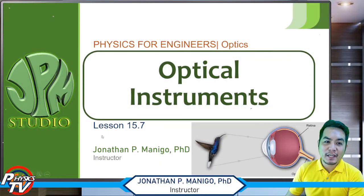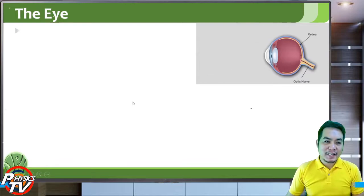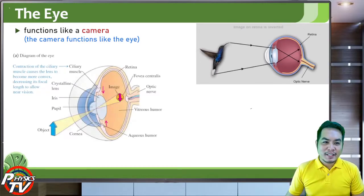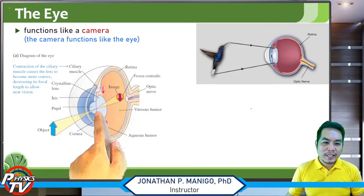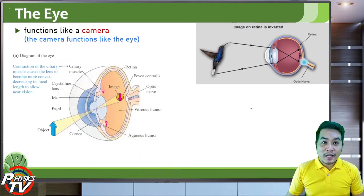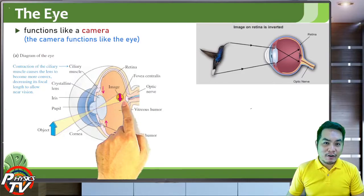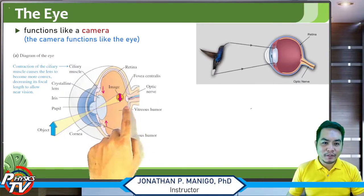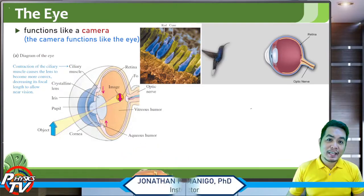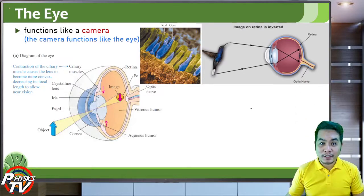The first optical instrument we will discuss is the eye, because it is the basis for most optical instruments. The eye functions like a camera — or rather, the camera functions like the eye. Looking at the diagram of the eye, it has a lens — a converging lens — that creates a real and inverted image on the back of the eyeball, called the retina. The retina contains rods and cones, which are light-sensitive cells connected to the optic nerve toward your brain for processing.